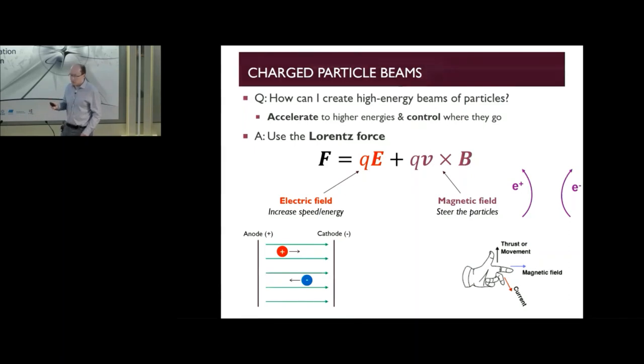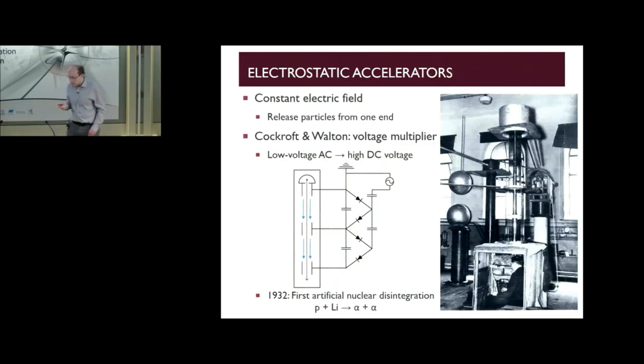Based on that equation, the simplest type of accelerator you might be able to think of would be one based on a constant electric field, and that's what we call an electrostatic accelerator. You take a charged particle, a source of charged particles, you put it at one end of the electric field and they get accelerated to the other end of the field. One of the big innovations in the development of electrostatic accelerators is this voltage multiplier circuit that Cockcroft and Walton devised.